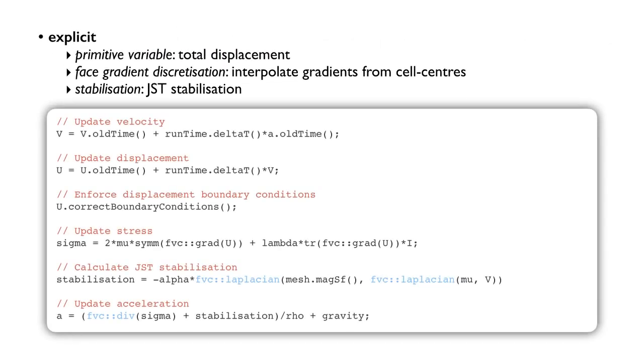And the last one, the explicit. There's lots of different ways to do it. This is just one simple way to do it. This is the velocity, so I'll just say the next time step. Velocity is the old velocity plus the time step by the old acceleration. The new displacement is the old displacement plus the time step by the new velocity. We can enforce our boundary conditions on the displacement field, and we update our stress at the cell centers. We've got layer stabilization. In this case I'm using JST, maybe we could use Rhie-Chow, and then we update our new acceleration. This is just the momentum equation here, where I divide by the density, and then that's the end of the time step. Pretty straightforward to implement this.